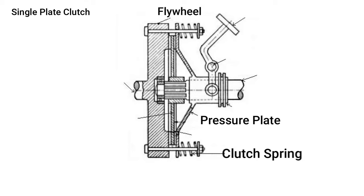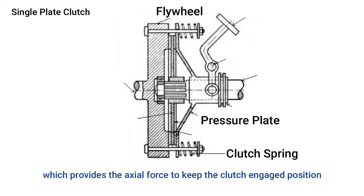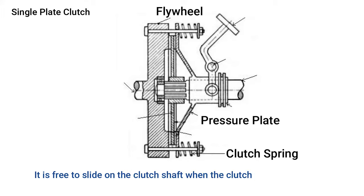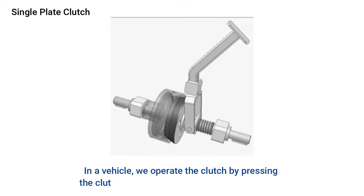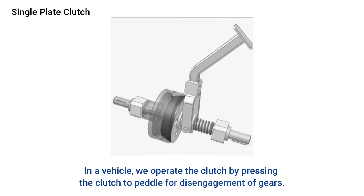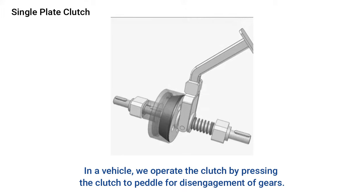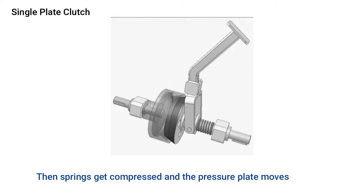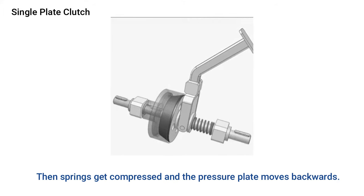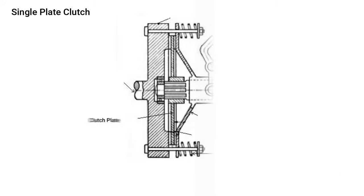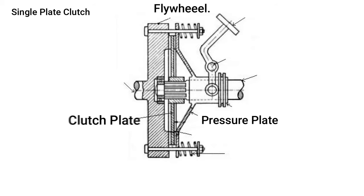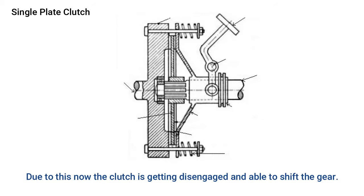The flywheel is attached to the engine crankshaft and rotates with it. A pressure plate is bolted to the flywheel through clutch springs, which provide the axial force to keep the clutch in the engaged position. When the clutch pedal is pressed for disengagement of gears, the springs get compressed and the pressure plate moves backward. The clutch plate then becomes free between the pressure plate and flywheel, disengaging the clutch and allowing gear shifting.